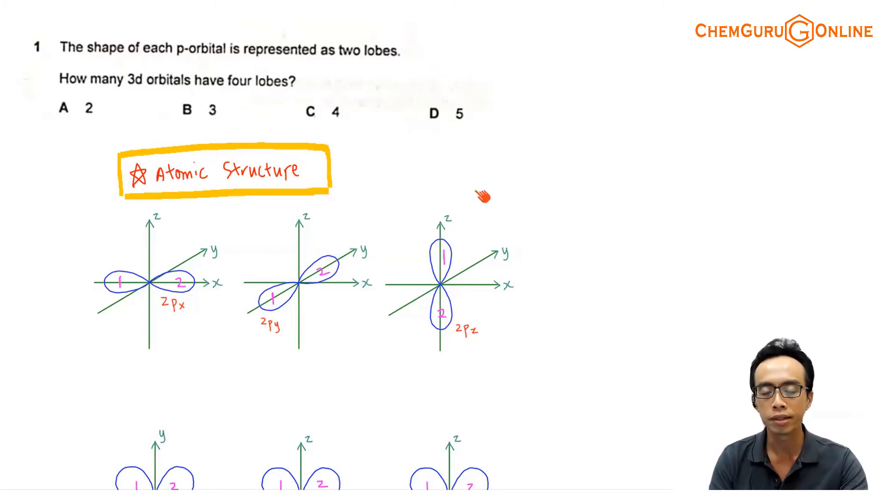Let us focus on p and d orbitals instead. Now p orbitals will be a dumbbell shape, or sometimes I will refer to them as an infinity sign. And you have 2 loops. So I've already numbered them, 1 and 2. We just know that in total, there are 2 loops.